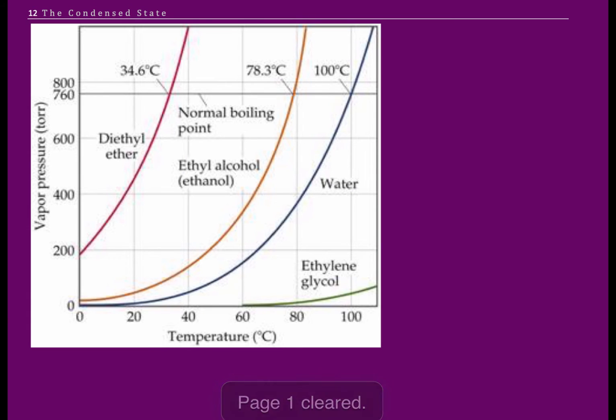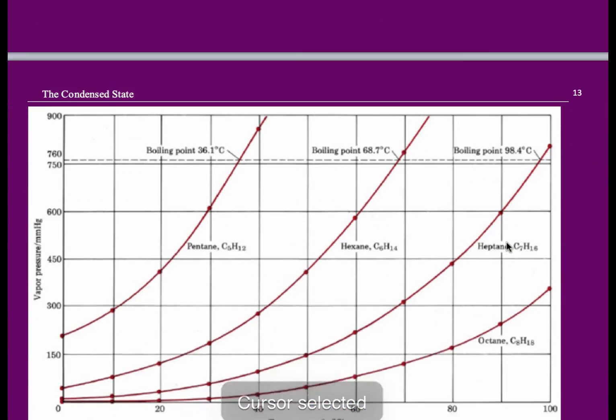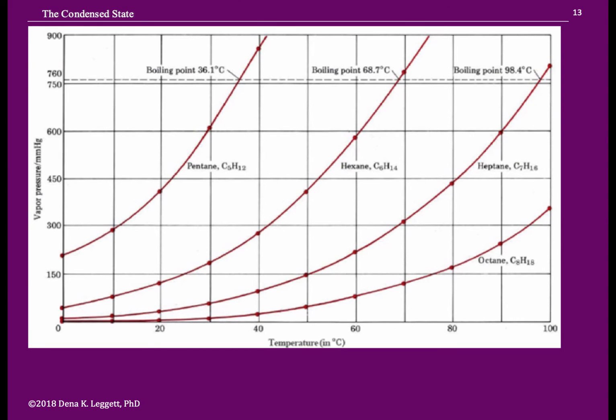Now, I want to look at this at a little higher level here. Let's compare substances that all have London dispersion. All of these are hydrocarbons. The only intermolecular force for a hydrocarbon is London dispersion. So again, we have temperature versus vapor pressure. Now, as I go from each of these, you notice that pentane has five carbons, hexane has six, heptane has seven, octane has eight. So as you go from each line, what you're doing is increasing the size of the molecule.